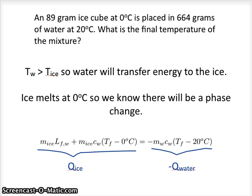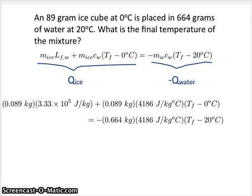So let's try and do some math. Plugging some numbers into this equation, we have 89 grams or 0.089 kilograms of ice. If we look up online or in the textbook, we get that the latent heat of fusion for water is 3.33 times 10 to the 5 joules per kilogram.